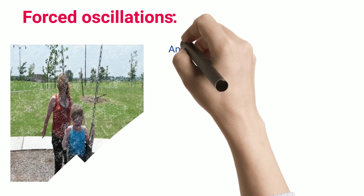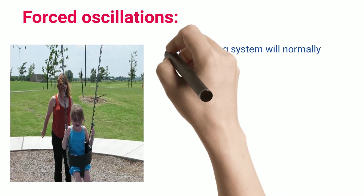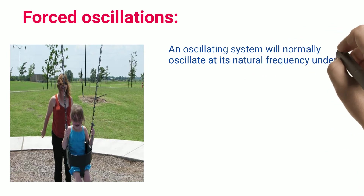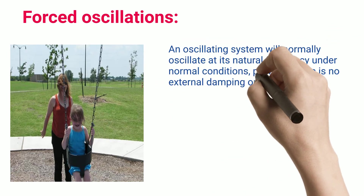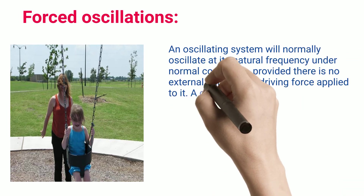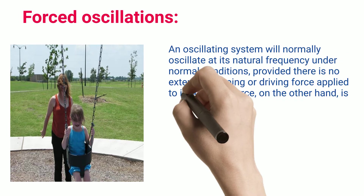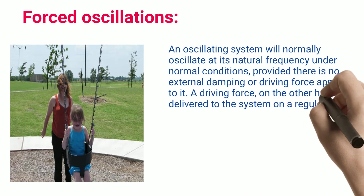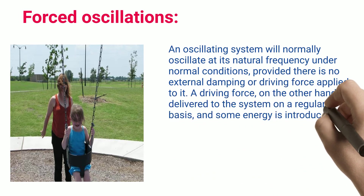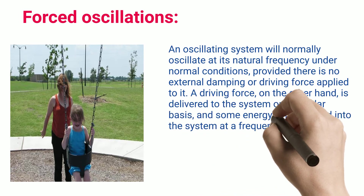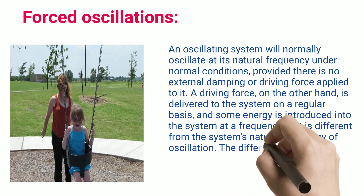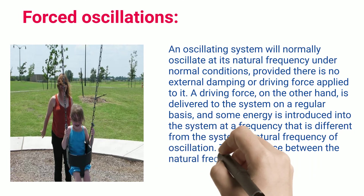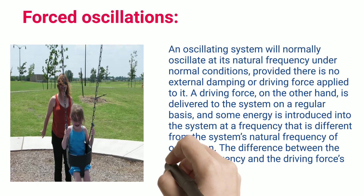Forced Oscillations. An oscillating system will normally oscillate at its natural frequency under normal conditions, provided there is no external damping or driving force applied to it. A driving force, on the other hand, is delivered to the system on a regular basis, and some energy is introduced into the system at a frequency that is different from the system's natural frequency of oscillation. The difference between the natural frequency and the driving force's frequency determines the force of forced vibrations.